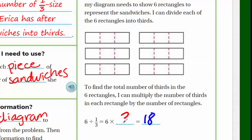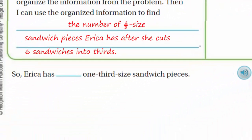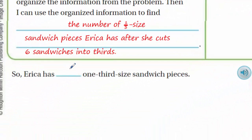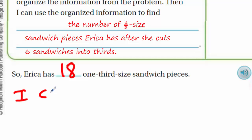So Erica has 18 one-third size sandwich pieces. Now I'll explain how you can use multiplication to check your answer. What we do is multiply the quotient and the divisor to see if the product equals the dividend.